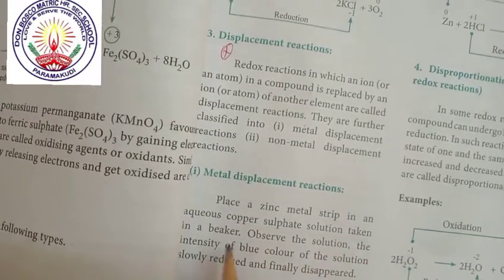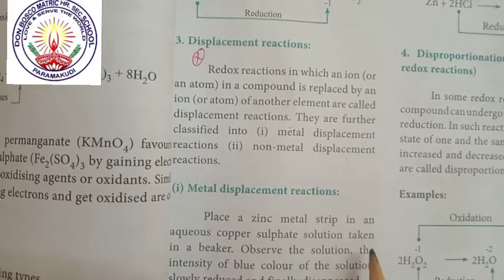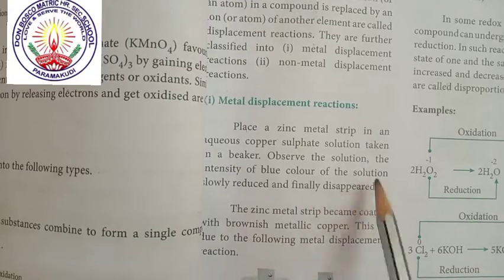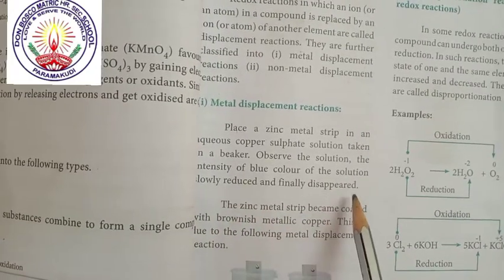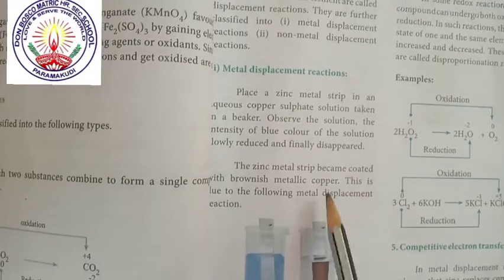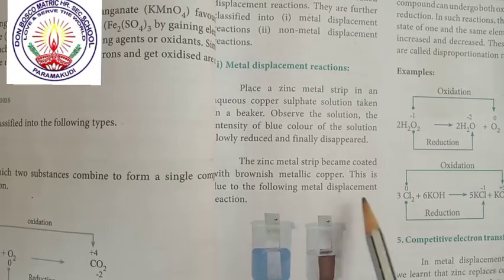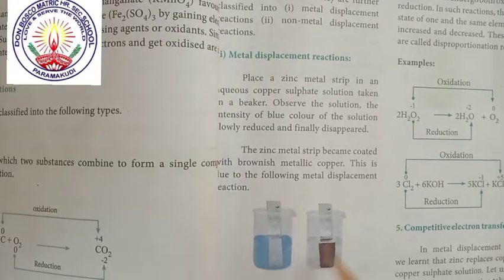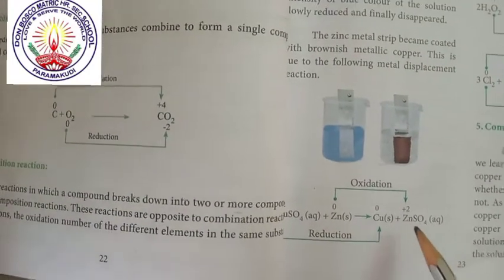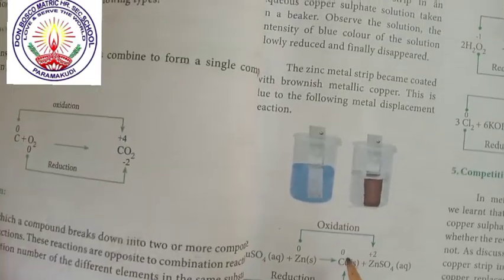Now let us discuss metal displacement reactions. Place a zinc metal strip in an aqueous copper sulfate solution in a beaker and observe the solution. The intensity of the blue color of the solution slowly reduces and finally disappears. The zinc metal strip becomes coated with brownish metallic copper. This is due to the following metal displacement reaction.